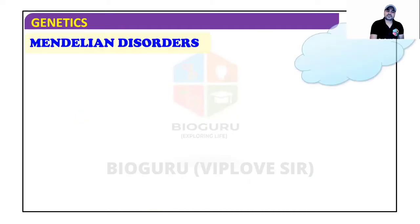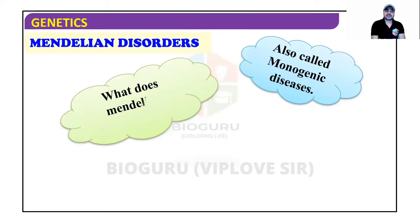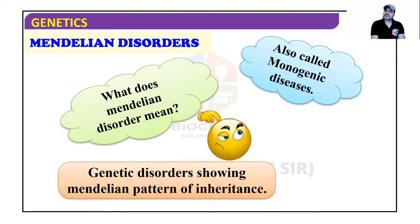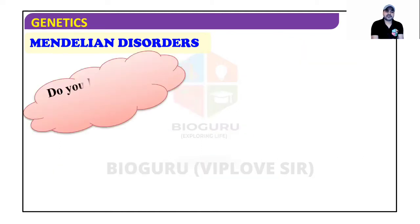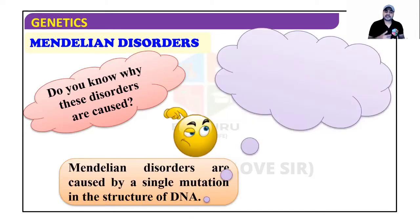Mendelian disorders are also called monogenic diseases. Mendelian disorders mean genetic disorders showing Mendelian pattern of inheritance, because they express Mendel's patterns. That is why they are called Mendelian disorders, and they are generally monogenic.